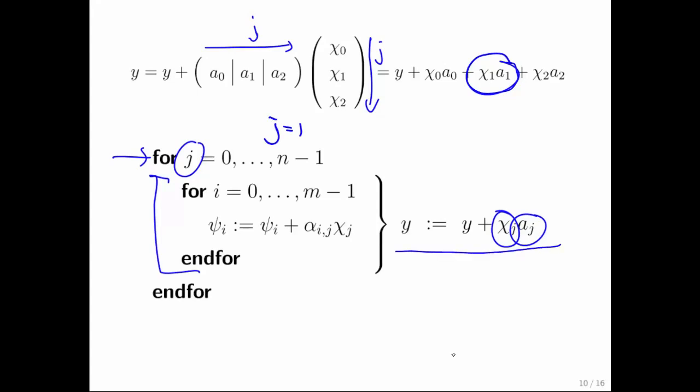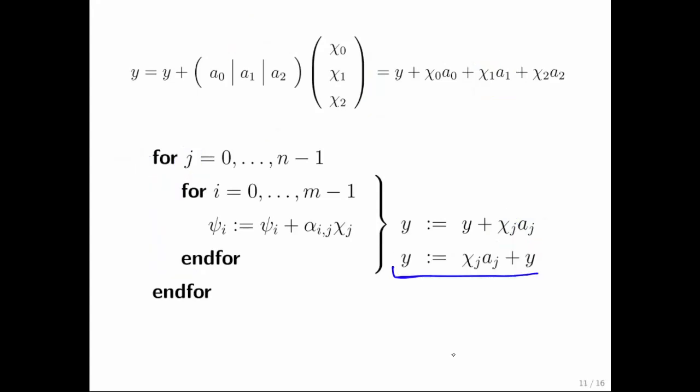Now, if you rearrange this slightly, what you find is this expression right here. Now, what is that? This is a scalar. Let's call it alpha. This is a vector. Let's rename it x. This is a vector y. But what you notice is that's exactly our AXP operation. So, we should be able to implement matrix vector multiplication in terms of calls to the AXP routine.